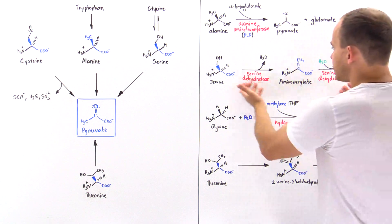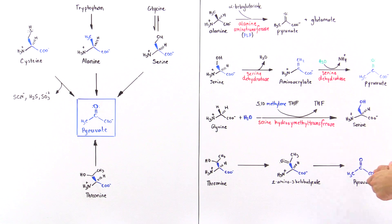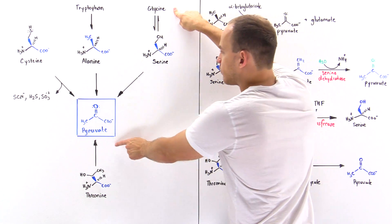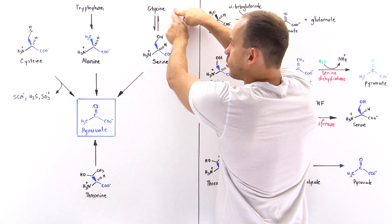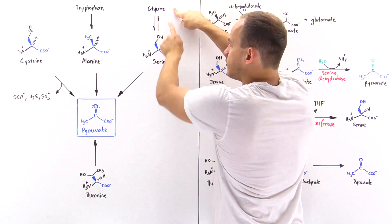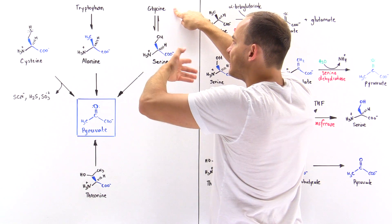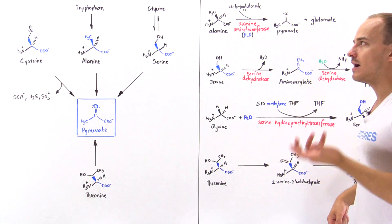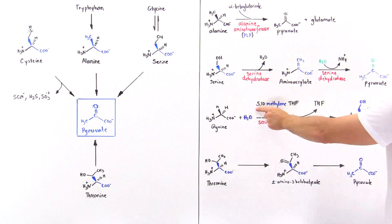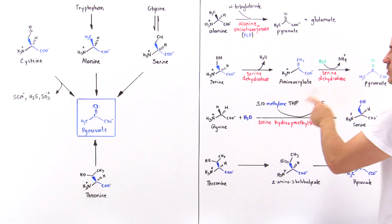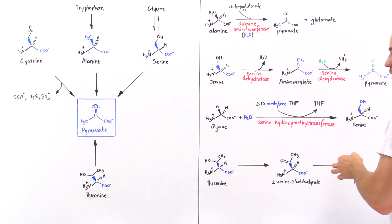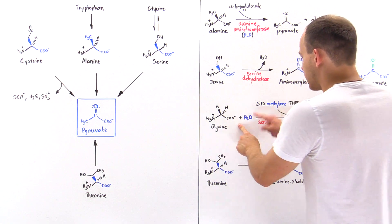Now glycine can actually be transformed into pyruvate by first transforming the glycine into serine. The way that we form the serine from glycine is by adding a hydroxymethyl group. Where does that hydroxymethyl group come from? Well, from a molecule known as 5,10-methylene THF, where THF stands for tetrahydrofolate. So we have glycine in the presence of water and in the presence of this molecule, 5,10-methylene tetrahydrofolate, which basically undergoes a reaction that is catalyzed by serine hydroxymethyl transferase.